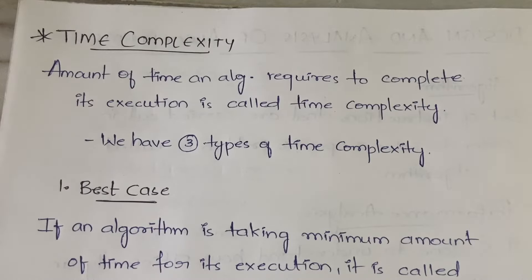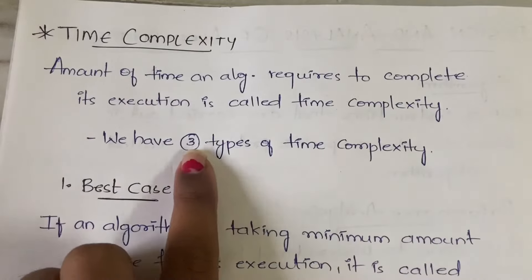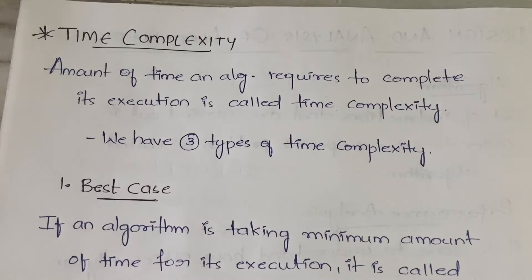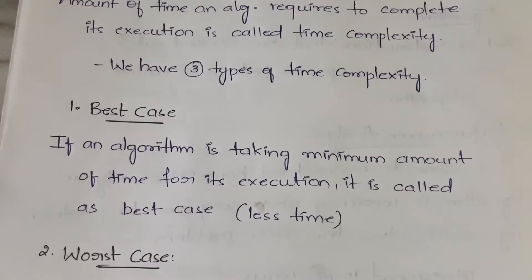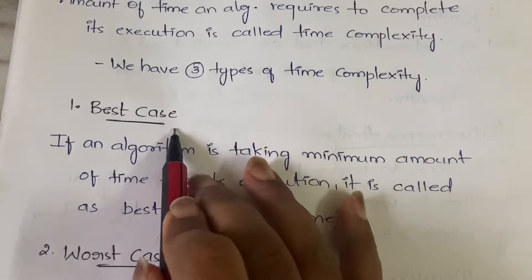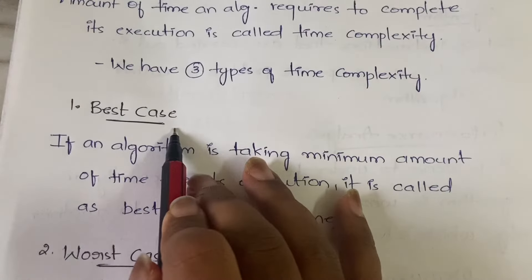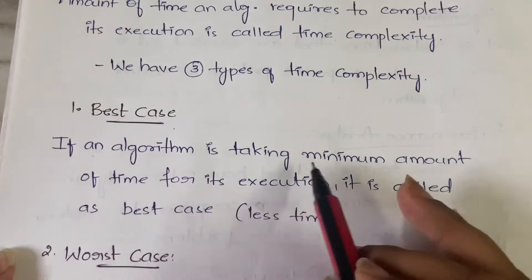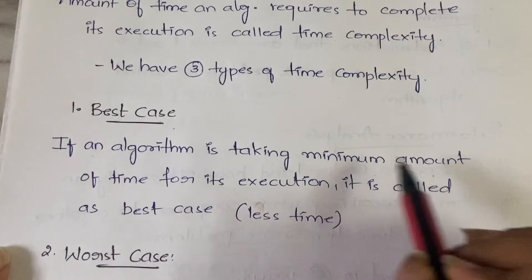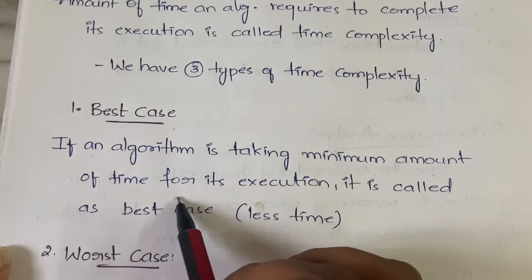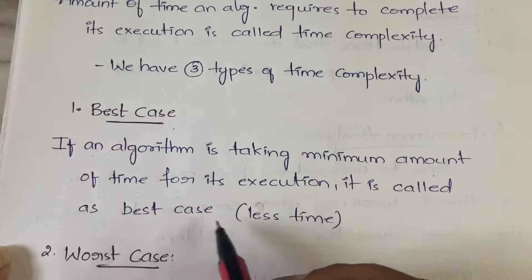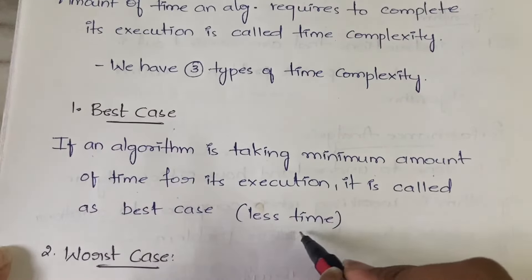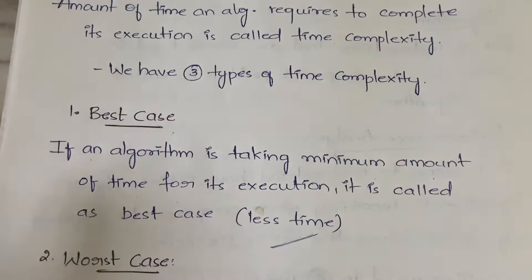There are three types of time complexities. The first one is best case time complexity. Best case is when an algorithm is taking the minimum amount of time for its execution — if it is taking less amount of time, it is called best case time complexity.